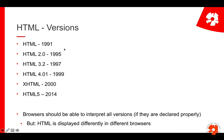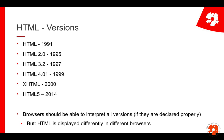HTML has different versions. It started in 1991 — those are the first websites shown in the first lecture — and it evolved and is still evolving. Ideally any browser nowadays should be able to interpret all versions if it's declared properly in the source code. But the issue is that HTML is displayed slightly differently in different browsers. Some browsers are stricter; others are more liberal. So it's always a bit tricky to get a website to look exactly how you want it on all different browsers.